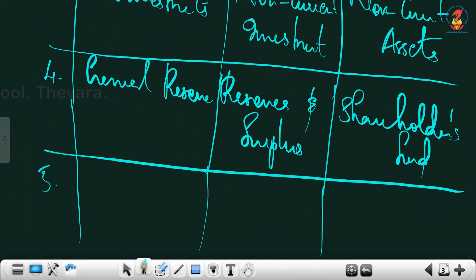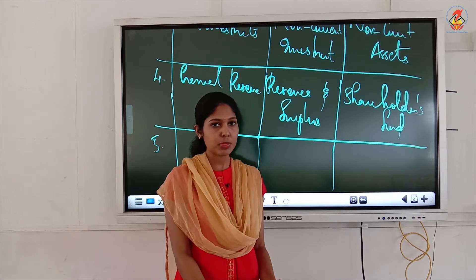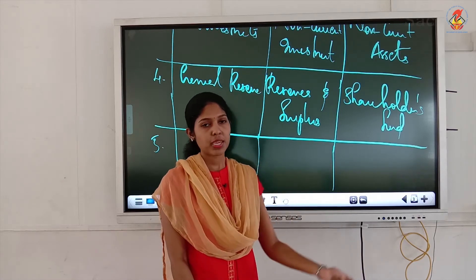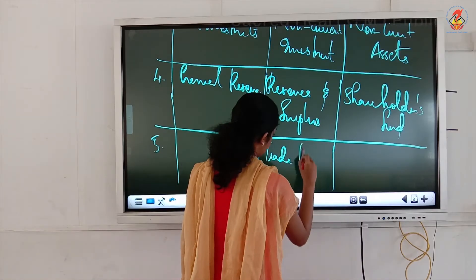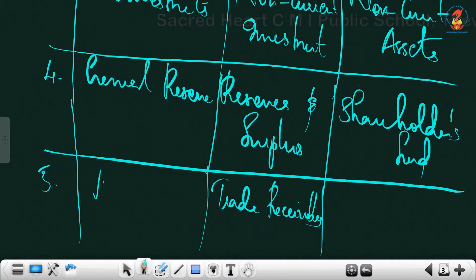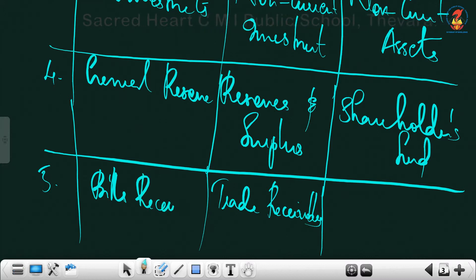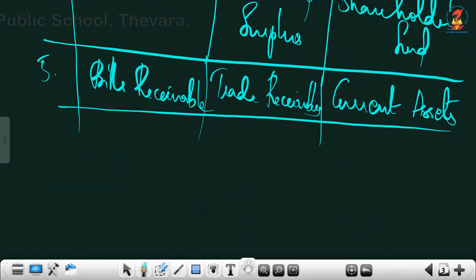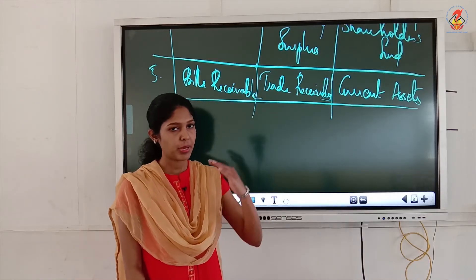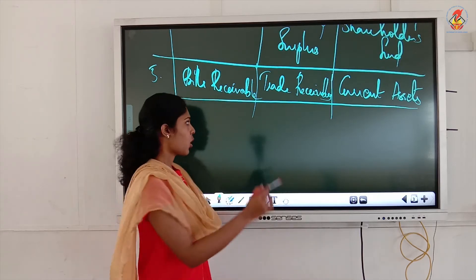Fifth one: bills receivable. Bills receivable comes under the subhead trade receivables — not trade payables — and the major head is current assets. Sixth one: ten percent debentures. Debentures come under the subhead long-term borrowings and the major head is non-current liabilities.